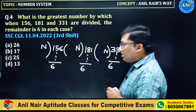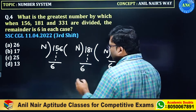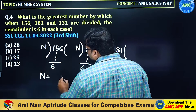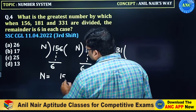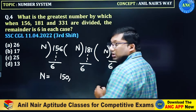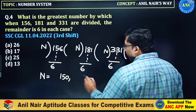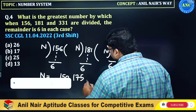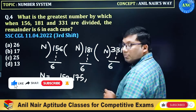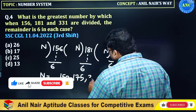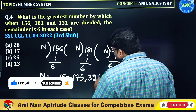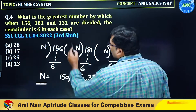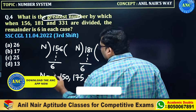We already did a similar question. So n should be a factor of 156 minus 6, which is 150. n should be a factor of 181 minus 6, which is 175. n should be a factor of 331 minus 6, which is 325. And he is asking for the greatest number.